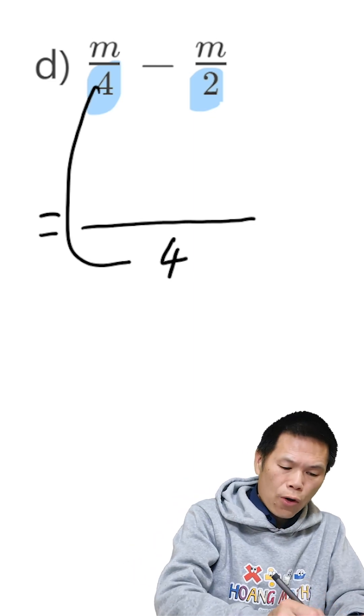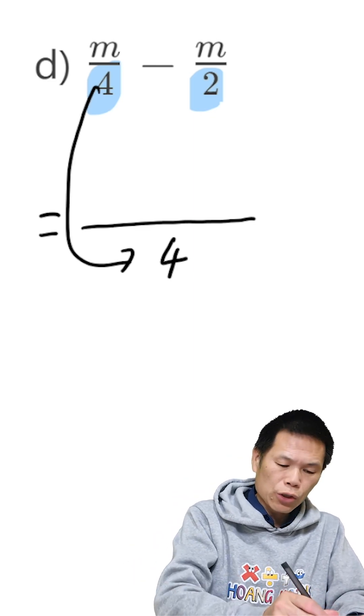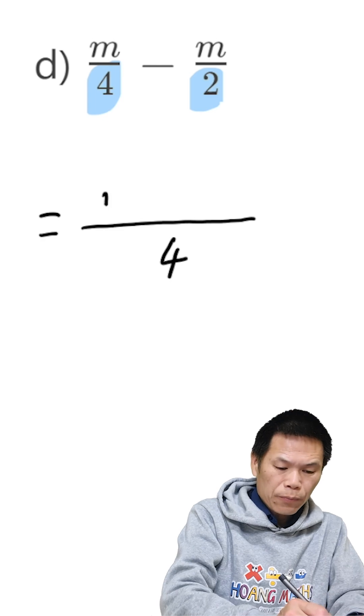So from 4 to 4, I just times by 1. So the top times by 1 as well. So m times 1 is m.